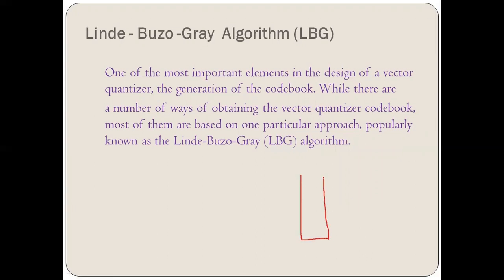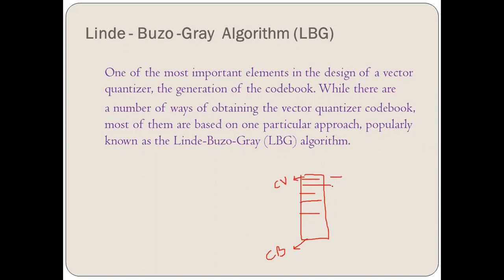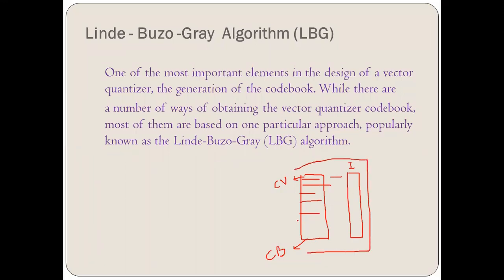If you remember, there was a code book of L-dimensional or K-dimensional vectors. This complete set was called the code book, and the individual elements were called code vectors. There were also indexes for these code vectors. This was at the source end, that is at the encoder side, as well as at the decoder side. The problem in vector quantization now arises: how do we design this code book, because the code book is a very important part.